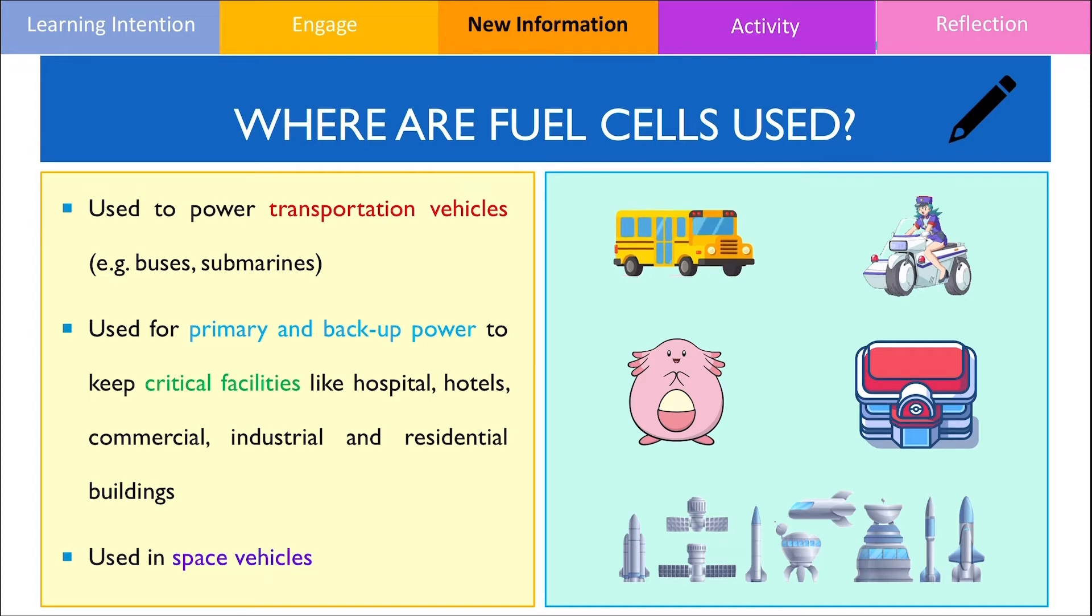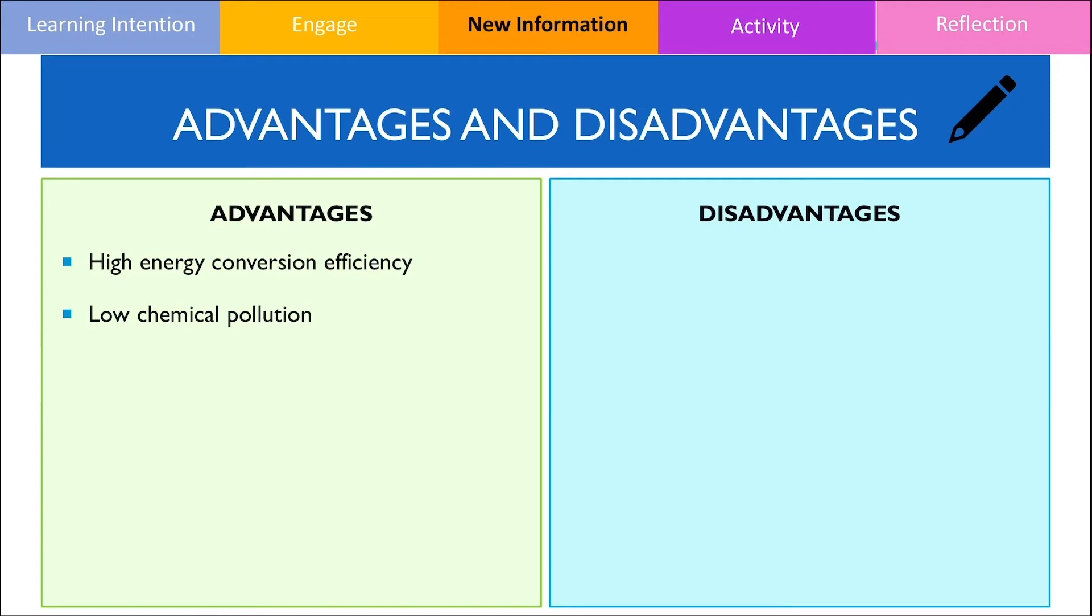The next thing that I would like to discuss are the advantages and disadvantages of fuel cells as a source of energy. The main advantages of fuel cells will be that they have a high energy conversion efficiency, which means that a small amount of energy is lost when energy is converted. It also results in less chemical pollution compared to thermal power plants that use fossil fuels. There's also a lot of flexibility in the type of fuel used.